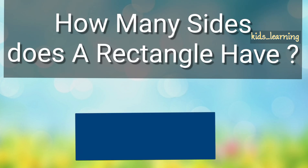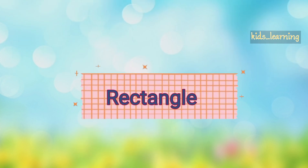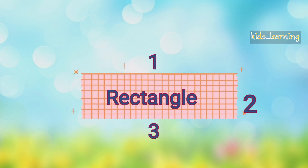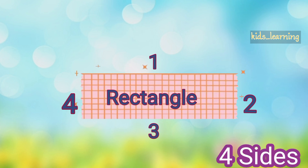How many sides does a rectangle have? Count with me. 1, 2, 3, 4. A rectangle has 4 sides.